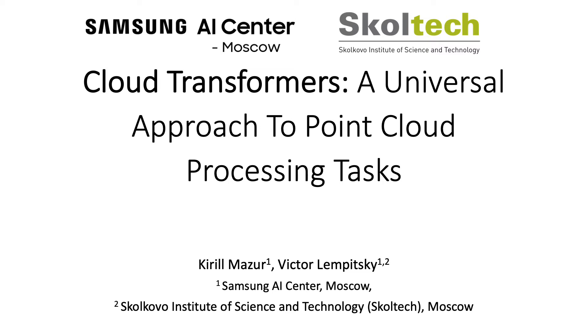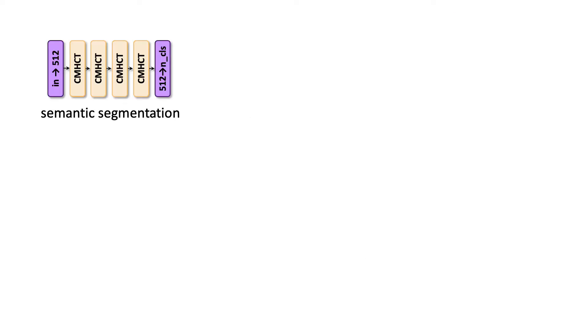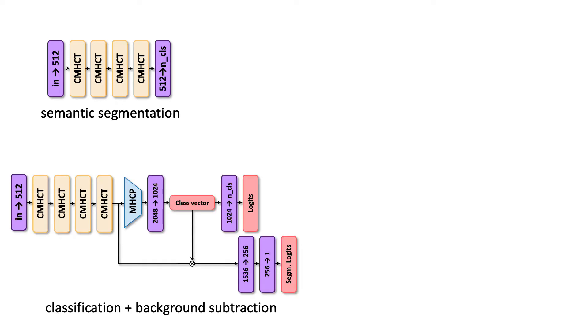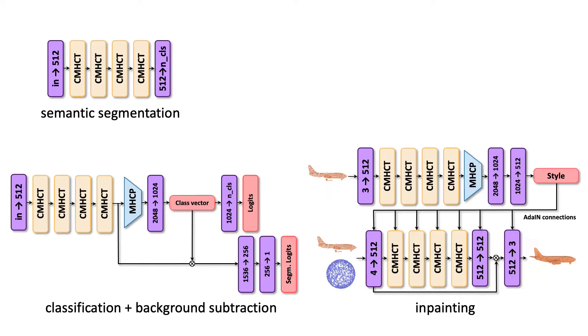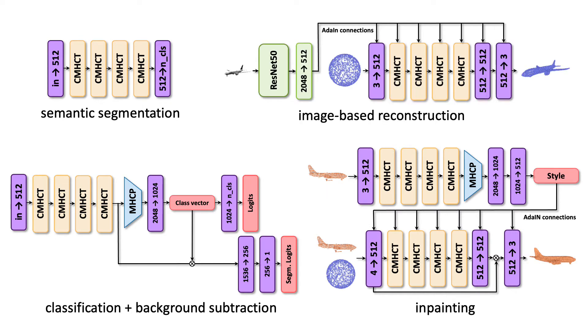We present cloud transformers, a new type of deep architecture for processing point clouds. In our paper, we present cloud transformers for semantic segmentation, for joint classification and background subtraction, for in-painting, and for image-based reconstruction. Note that cloud transformers can be used to handle both recognition tasks and generation tasks.